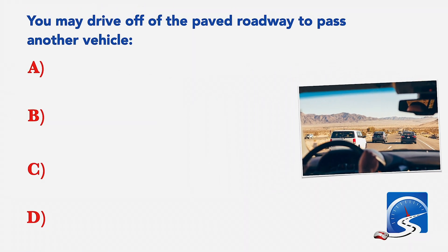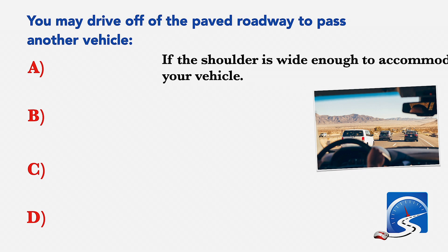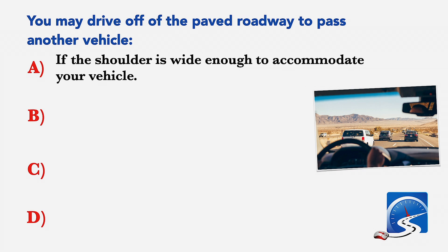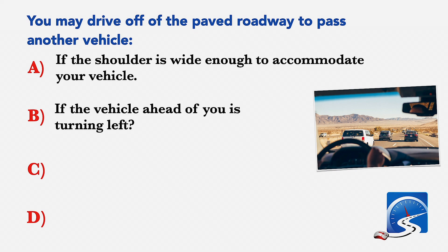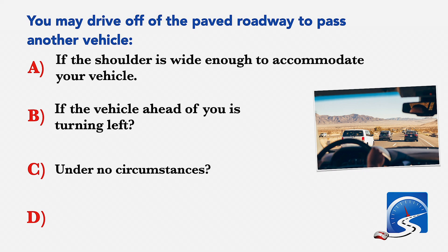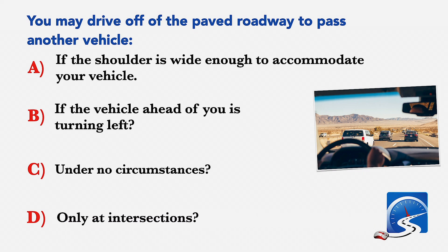You may drive off the paved roadway to pass another vehicle: A: If the shoulder is wide enough to accommodate your vehicle. B: If the vehicle ahead of you is turning left. C: Under no circumstances. D: Only at intersections. Correct answer C: Under no circumstances.